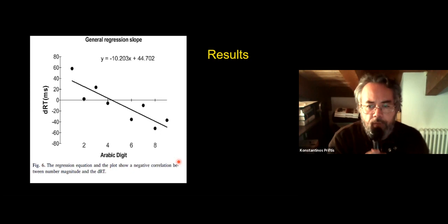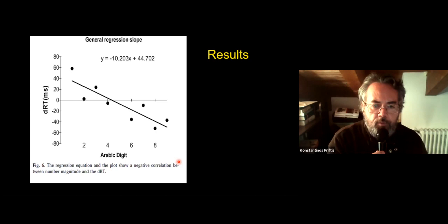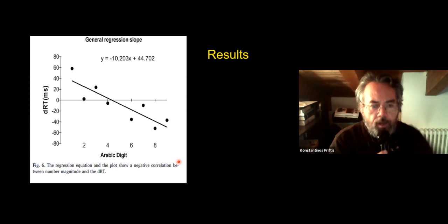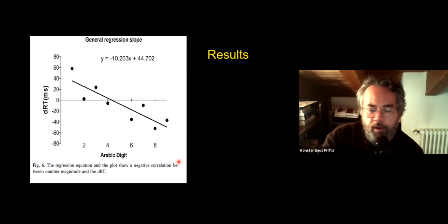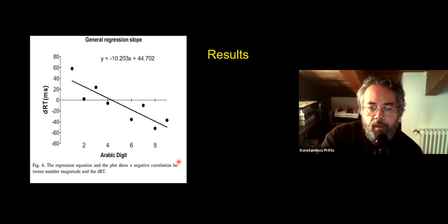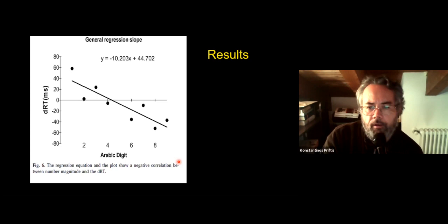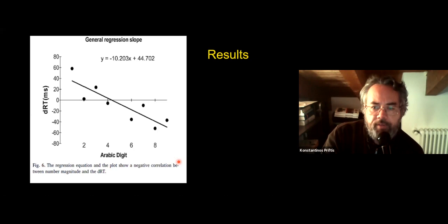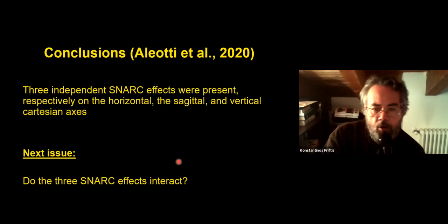The more positive this difference, the more the advantage for the left hand, and the opposite for the right hand. When we checked the SNARK effects on each Cartesian axis, we found exactly a SNARK effect on the horizontal axis, the SNARK effect on the vertical axis, and the SNARK effect on the sagittal axis. I would like to highlight that the three SNARK effects were not highly correlated — correlations among them varied from 0.2 to 0.4 — suggesting some independence of these three SNARK effects along the Cartesian axes.